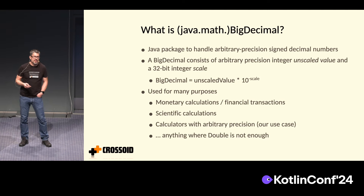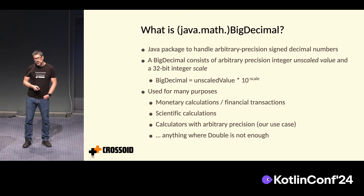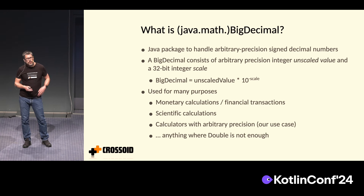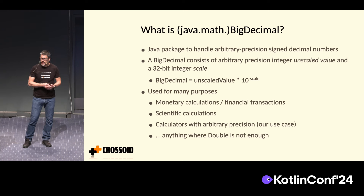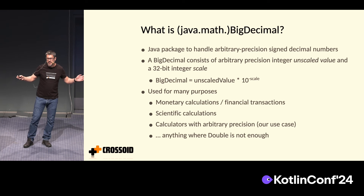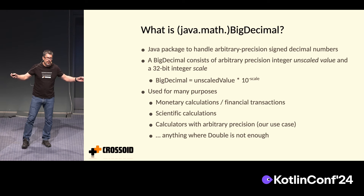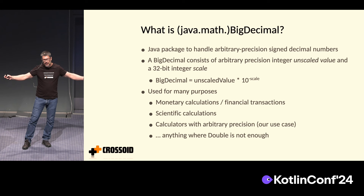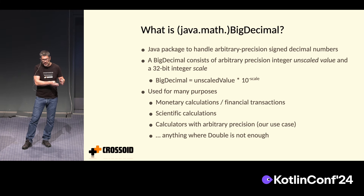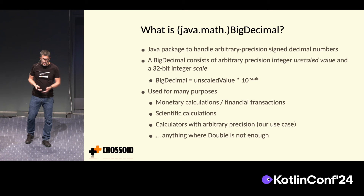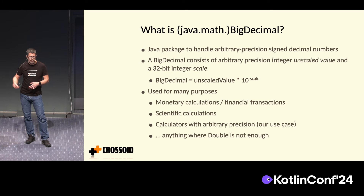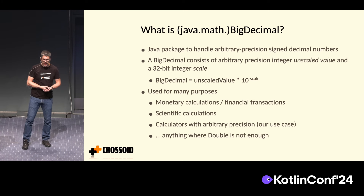So what is BigDecimal? It's a Java package that allows you to have numbers that are arbitrarily big. So if you want to have 100 decimal places, BigDecimal is what you want to use. BigDecimal itself consists of a large integer and a scale that tells you exactly where the decimal point is. So it is: unscaled value × 10 to the minus scale.